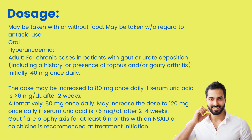Dosage: May be taken with or without food, and without regard to antacid use. Oral — Hyperuricemia in adults for chronic cases in patients with gout or urate deposition, including history or presence of tophus and/or gouty arthritis: initially 40 mg once daily. The dose may be increased to 80 mg once daily if serum uric acid is greater than 6 mg/dL after 2 weeks. Alternatively, 80 mg once daily may be increased to 120 mg once daily if serum uric acid is greater than 6 mg/dL after 2–4 weeks. Gout flare prophylaxis for at least 6 months with NSAIDs or colchicine is recommended at treatment initiation.